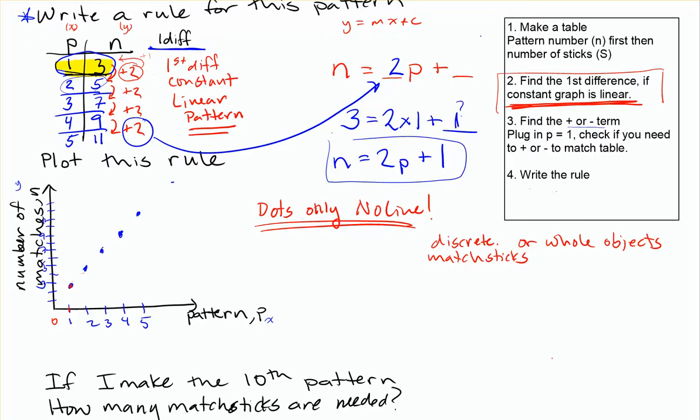So carrying on with linear patterns, we've looked at how to find the rule and we've now been able to plot it. Keep in mind that advice I was giving you about when to use dots and when to use a line. That will make a difference for you between a merit and an excellence and an achieved on a graph question. So make sure you understand that. Ask me more if you've got questions on that, but you'll see that in the example problems as well.